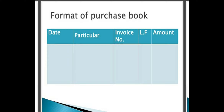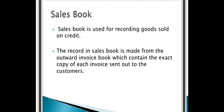The second subsidiary book is the sales book. Not only do business organizations purchase — they also make sales. For example, a manufacturing business can sell goods they have manufactured, or a trading business may purchase and sell goods for profit. Those transactions can be written in the sales book, but there are two conditions: the sale must take place on the basis of credit only — cash sales will not be recorded in the sales book — and the items must be goods only, not assets or any other items.